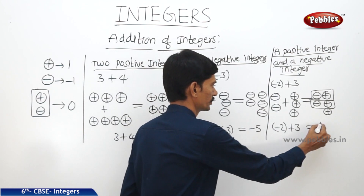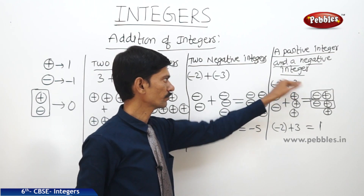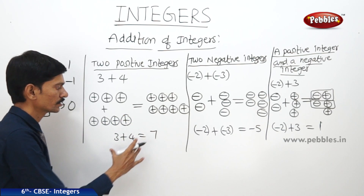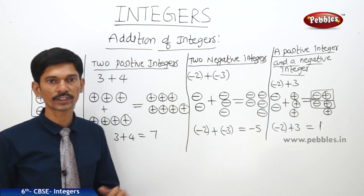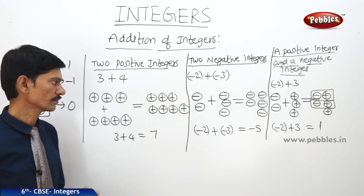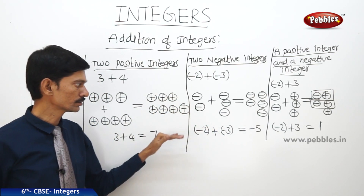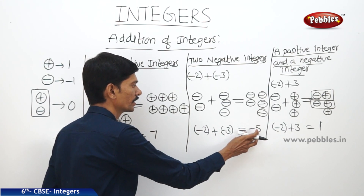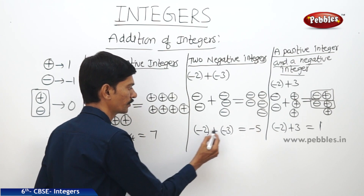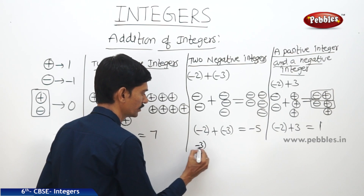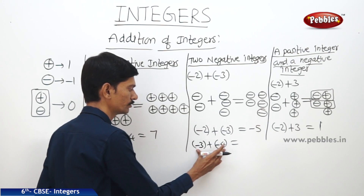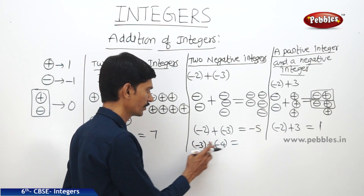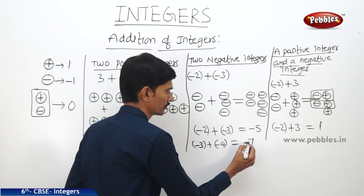This is a case where one integer is negative and the other is positive. Let us see all these cases once again. When we add any two positive integers, the sum remains a positive integer — just as with whole numbers or natural numbers, we add the two integers and put the positive sign. And minus 2 plus minus 3 is minus 5. When we add minus 3 plus minus 4, we add the two numbers without considering the negative sign: 3 plus 4 is 7.